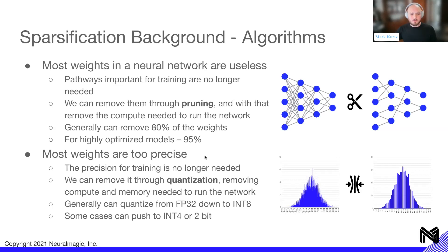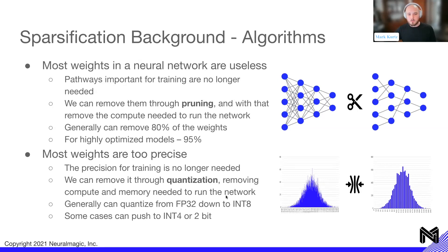Additionally, most weights are too precise — the precision needed for training is no longer needed when we move into deployment. We can remove it through quantization, which not only removes precision but also removes the compute and memory needed to run the network. Generally we can quantize from the standard float32 down to an int8 distribution, and in some cases can push it to int4 or even 2-bit quantization in terms of representation.